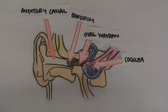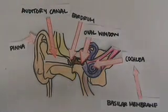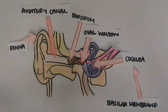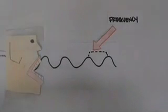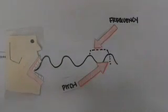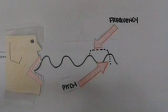The movement of fluid causes ripples in the basilar membrane, which is lined with hair cells. The movement of hair cells causes impulses in nerve fibers, which meet at the auditory nerve and carry the message to the temporal lobe. Pitch is how high or low a tone is, and it is dependent upon the frequency of the vibration. The frequency of a wave is the number of complete wavelengths that pass a point in a given amount of time.